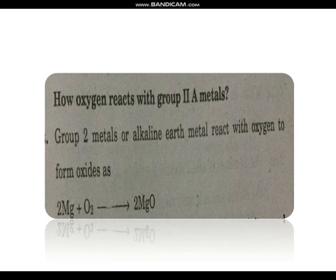How does oxygen react with Group 2A metals? Group 2A metals are alkaline earth metals. They react with oxygen to form oxides. For example, magnesium plus oxygen reacts to produce magnesium oxide.